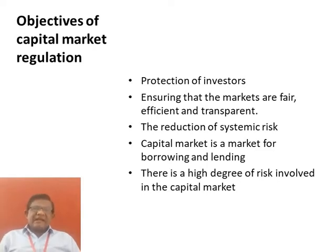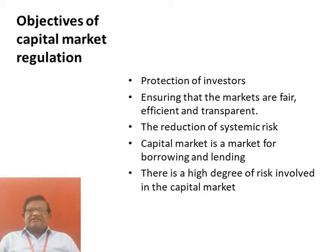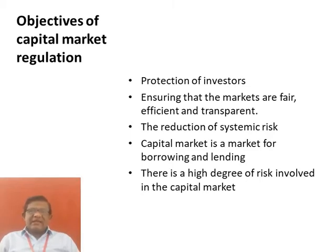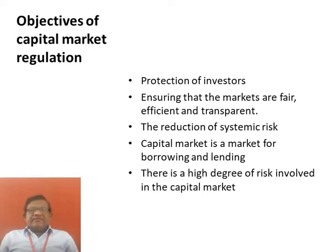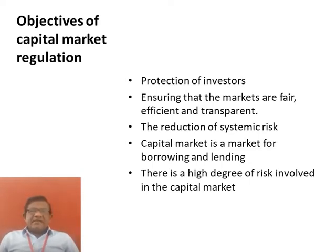The capital market is a market for borrowing and lending of long-term finance, that is, for a period of more than one year. The main types of instruments in the capital market are debentures, shares, government securities and bonds. There is a high degree of risk involved in the capital market as it involves long-term investments. The capital market is traded in two categories: one is the primary market, known as the new issue market, and another is the secondary market, which deals with existing securities. Borrowing and lending is for a period of more than one year, and long-term financial instruments like shares and bonds are traded.